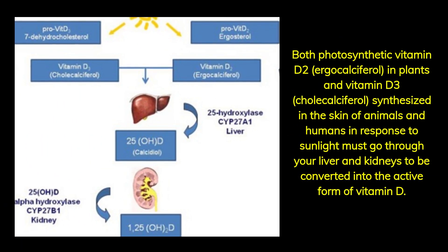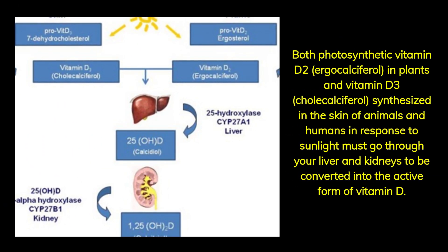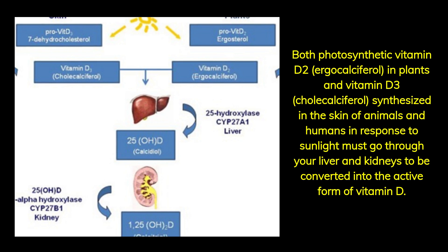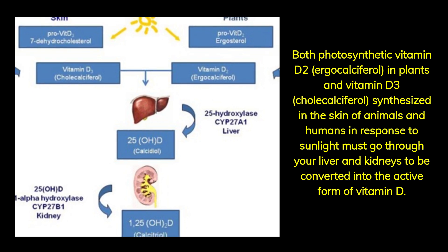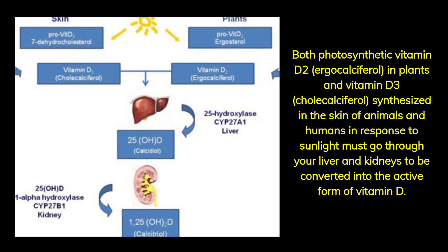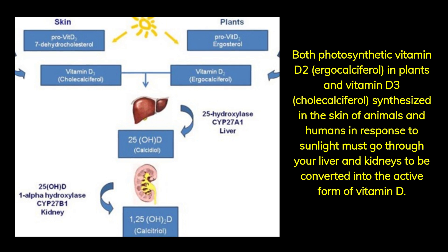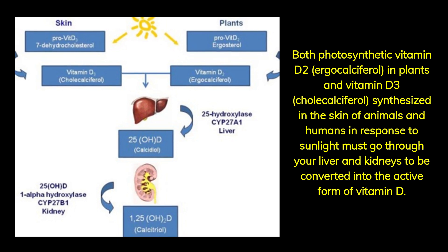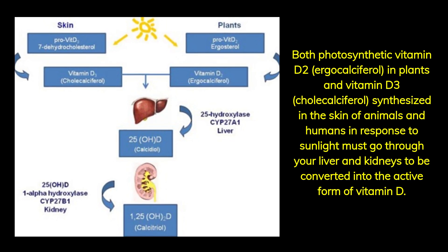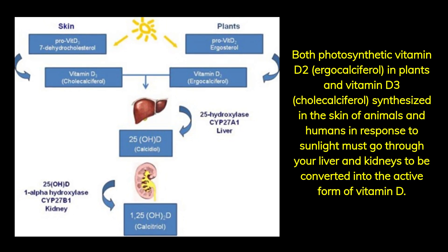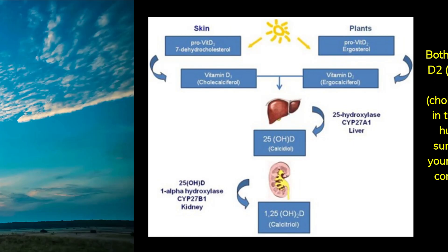Both photosynthetic vitamin D2, ergocalciferol, in plants and vitamin D3, cholecalciferol, synthesized in the skin of animals and humans in response to sunlight, must go through your liver and kidneys to be converted into the active form of vitamin D.